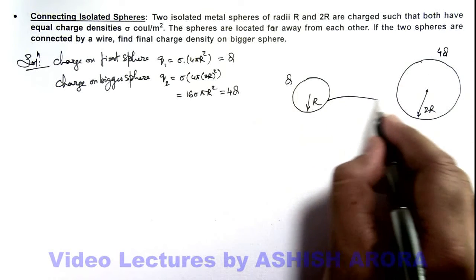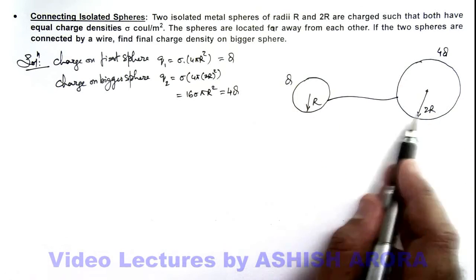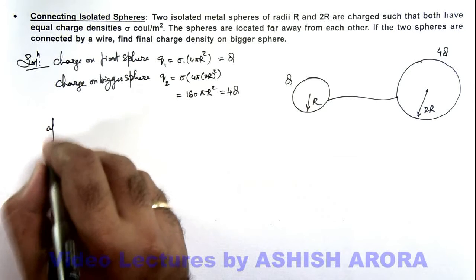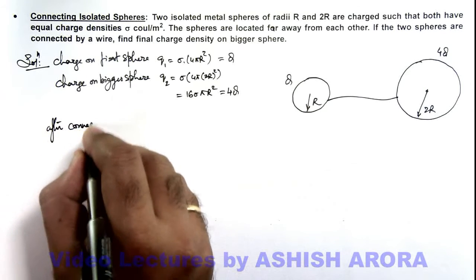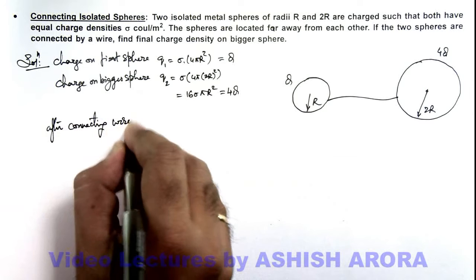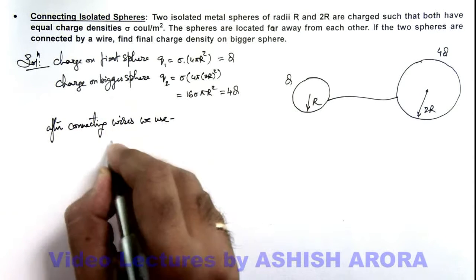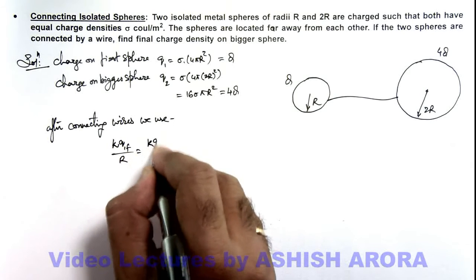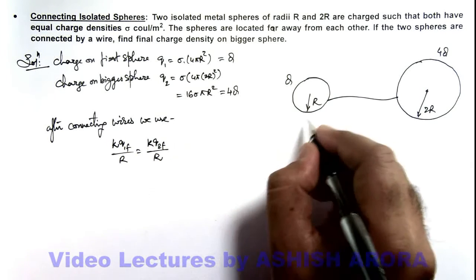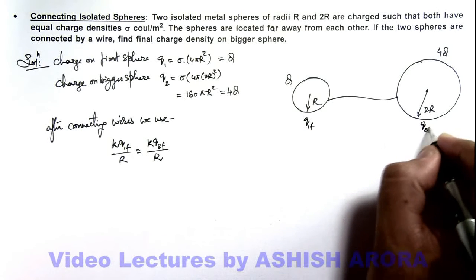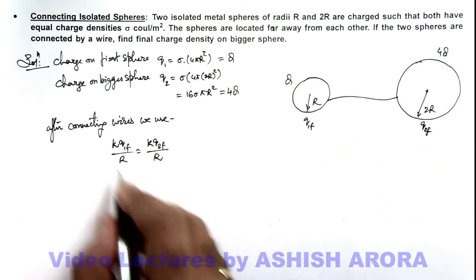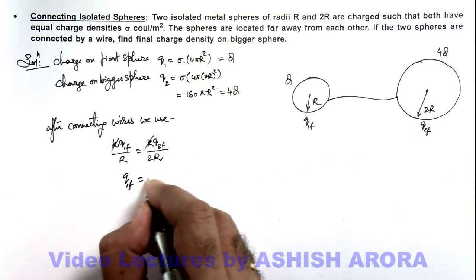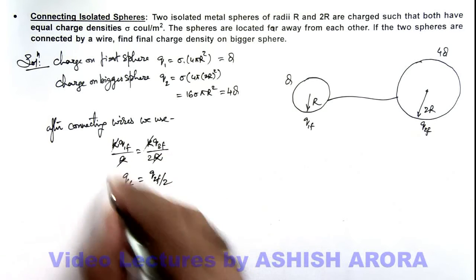Now if the two are connected by a wire, we know the charge distribution will take place till their potential becomes equal. So we can write, after connecting wires, we use kQ1final/R should be equal to kQ2final/2R, where Q1final and Q2final are the final charges on the two spheres. On simplifying, we are getting Q1final equals Q2final by 2. Here k and R get cancelled out.